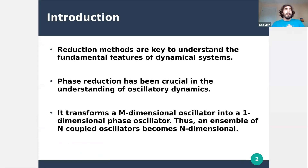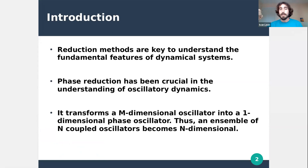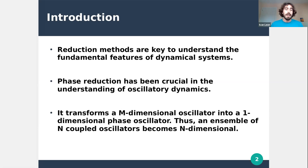When working with dynamical or complex systems in general, one of the most useful techniques is reduction methods, because they capture the fundamental features of the system and neglect what we are not interested in. In oscillatory dynamics, one of the most powerful methods is phase reduction, because it transforms an n-dimensional oscillator and reduces it to a one-dimensional phase oscillator, passing from n oscillators to an n-dimensional system — an enormous dimensional reduction.